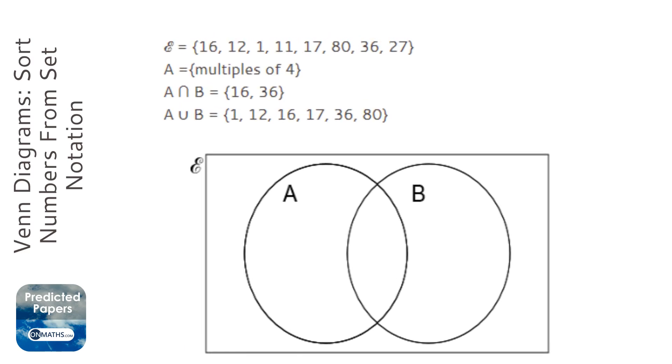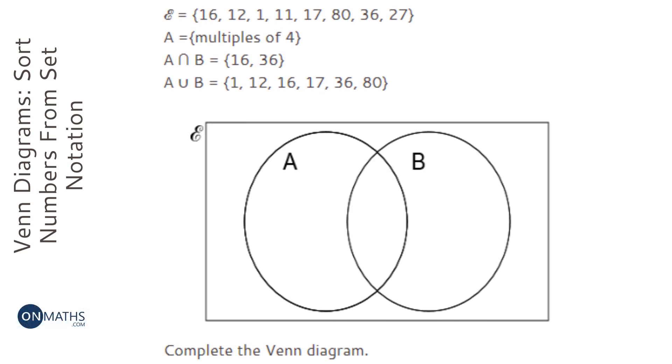We've been given a few sets in this question and we're asked to complete the Venn diagram. It says that A is multiples of 4, A and B is 16 and 36, and A or B is all of those values. So the easiest thing to do first is use this information.